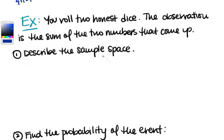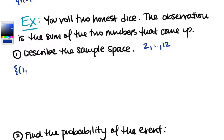We roll two honest dice, and the observation we're looking at is the sum of the two numbers that come up. We want to describe the sample space. Thinking about typical six-sided dice, the lowest we could get is 2 — if we got a 1 and a 1 — and the highest is 12. So those are the possible outcomes, but we could get these a lot of different ways. There's only one way to get a 2.